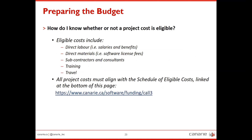How do you know whether a project cost is eligible? Start with the Schedule of Eligible Costs, but in general the eligible categories include: direct labor — salary and fringe benefits of the team working on the project; direct materials — limited to software license fees required to support the project; subcontractors and consultants — who must be Canadian; and training and travel, both of which are considered eligible costs. A link to the Schedule of Eligible Costs is provided in the call materials.